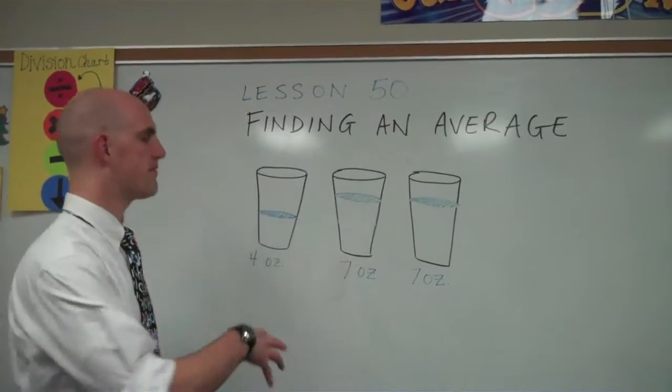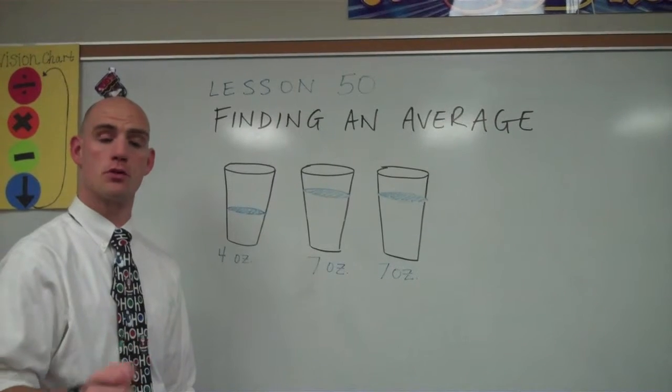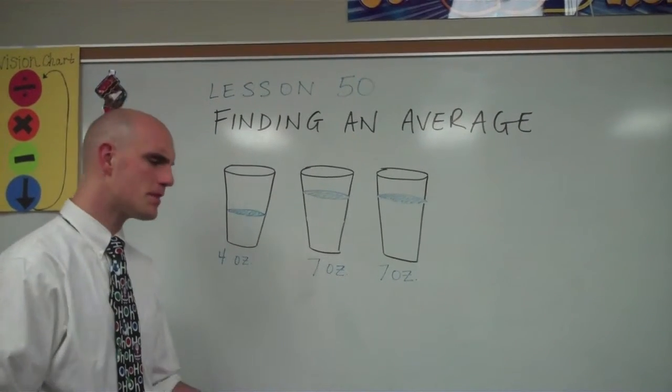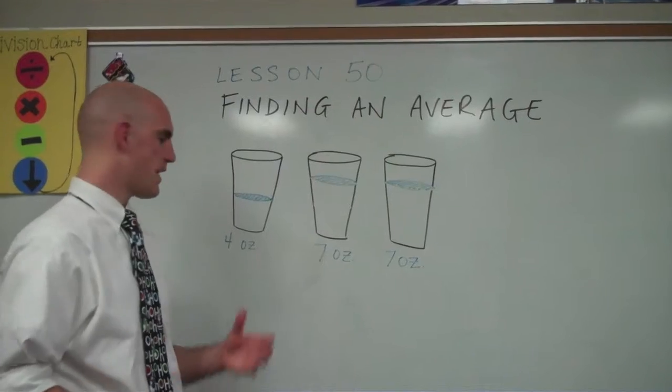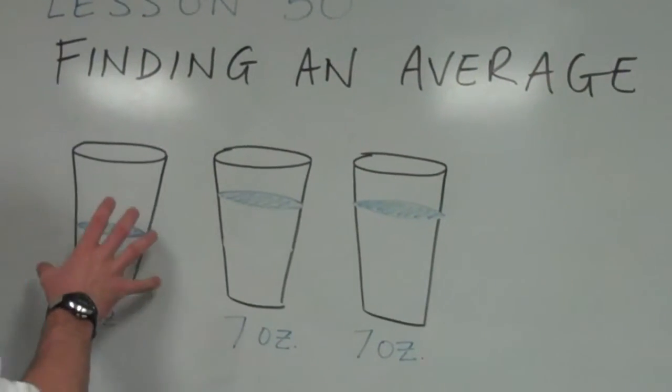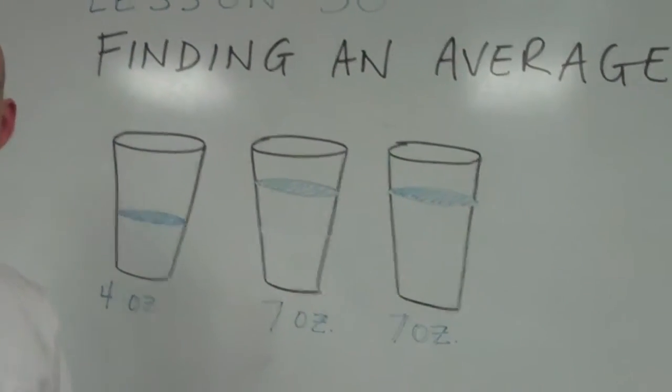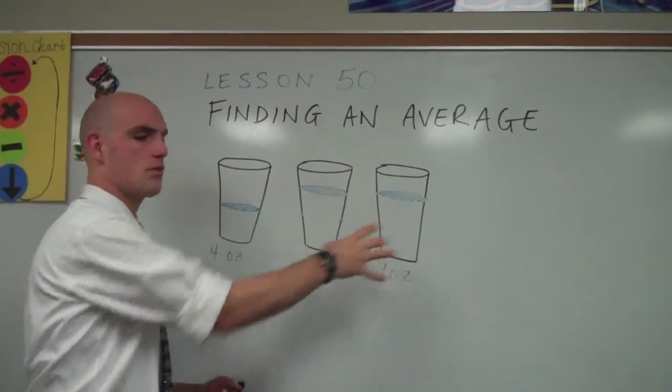As we move into talking about finding average on the board here, it's going to be exactly like when we divide it into equal groups using the paperclips. Except in this case, we have three glasses of liquid. They have four, seven, and seven ounces. In order to divide the liquid equally between the three glasses, we need to find the total and divide by the number of groups that we want to divide it into.